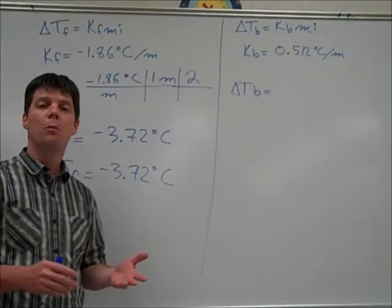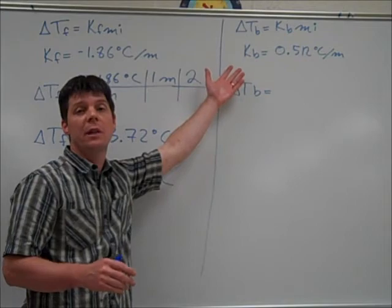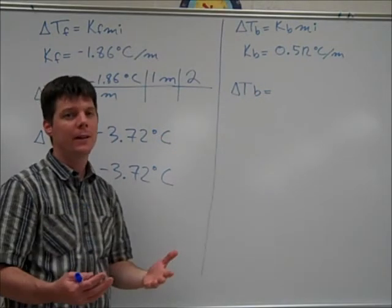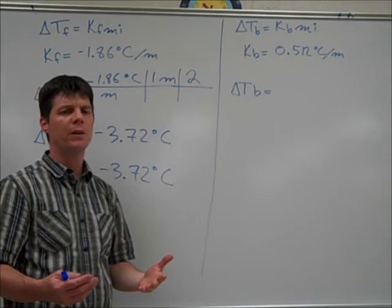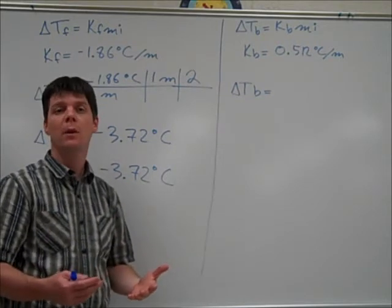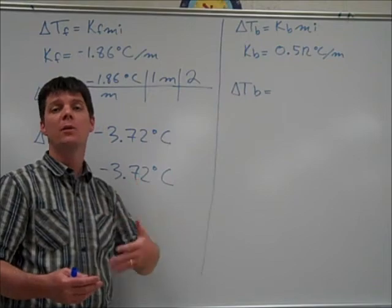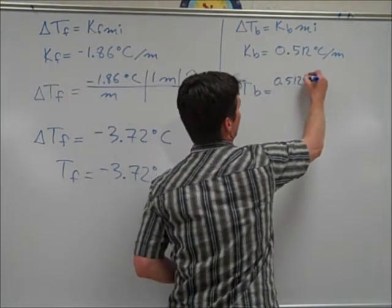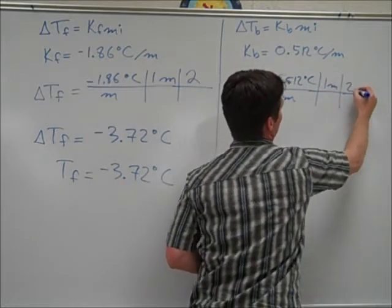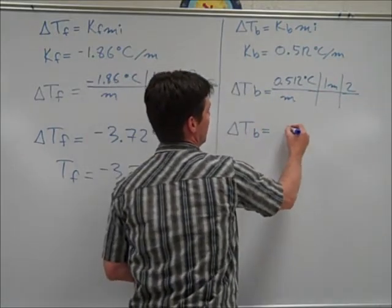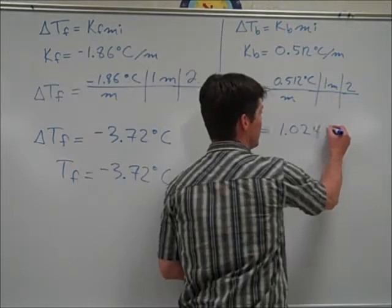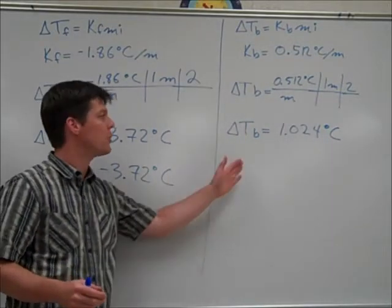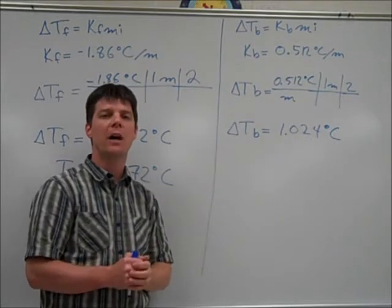To calculate the new boiling temperature for the salt solution, we use delta Tb equals Kb times m times i. This is set up just like the freezing temperature calculation — the only thing that changes is we use Kb instead of Kf. We've calculated our change in boiling temperature, which works out to be 1.024 degrees Celsius.